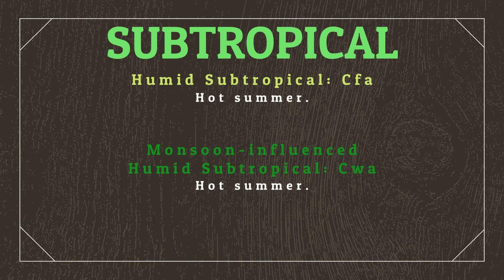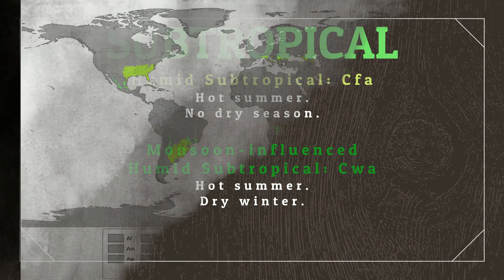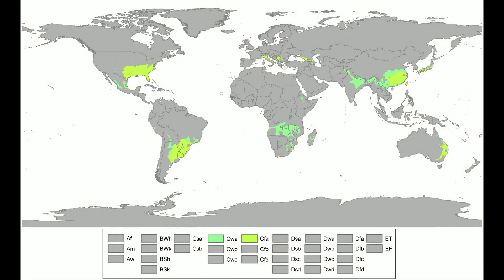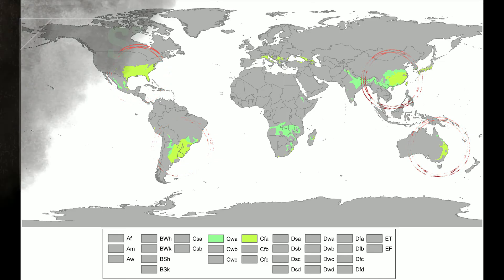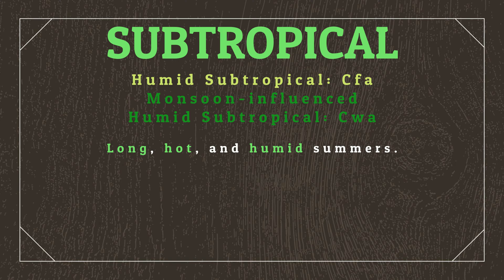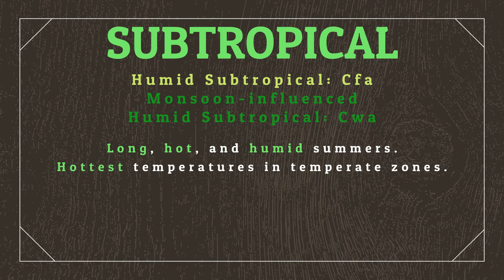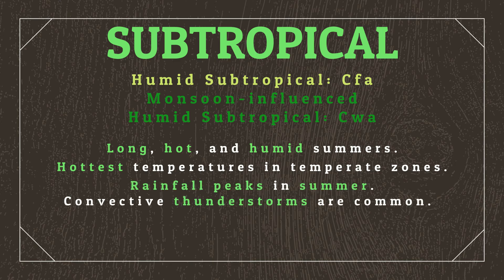Both climates have hot summers, but while humid subtropical regions have no dry seasons, monsoon-influenced humid subtropical regions have dry winters due to monsoonal activity. On Earth, many places across most continents experience some humid subtropical conditions, including the southeast states of the United States, much of eastern China, eastern South America, and most of the east coast of Australia. These climates have long, hot, and humid summers, with temperatures reaching the highest seen in temperate zones, and rainfall often peaks in the summer, where convective thunderstorms are common.